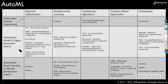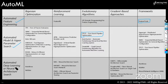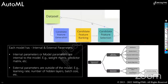For automated feature engineering, we will look at Featuretools. For automated model and hyperparameter search, we will use TPOT. For automated deep learning and neural architecture search, we will look at Auto-Keras. The rest of the tools are for a quick glance.